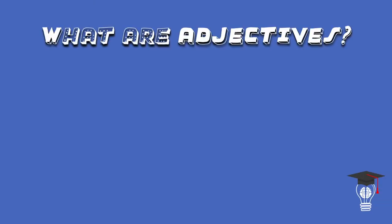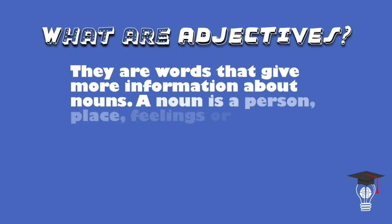Let's first take a look at what adjectives are. They are words that give more information about nouns. A noun is a person, place, feeling, or a thing.